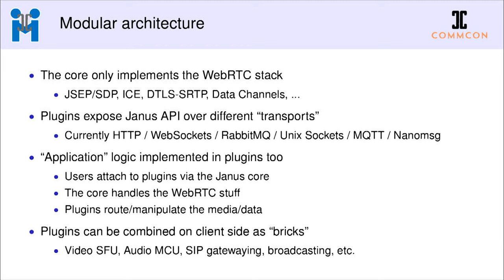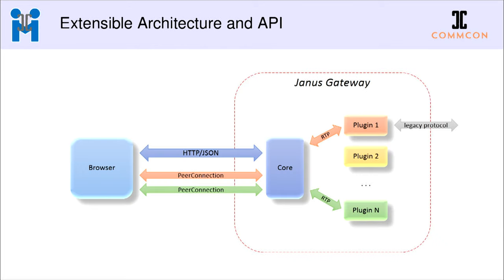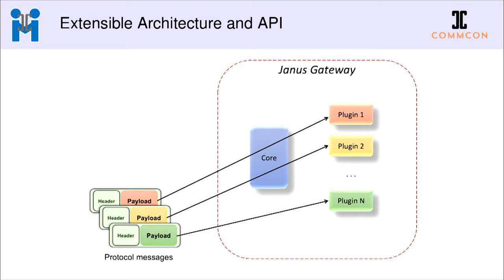In practice, a browser connects via some API to Janus, the core negotiates peer connections, and you can see media going back and forth. In the background these peer connections may be handled by different plugins at the same time, making it easy to combine functionality from different plugins in the same application. This is made possible by the fact that the Janus API is also modular, allowing different plugins to implement their own sub-protocol on top of that API.